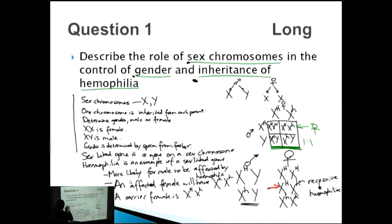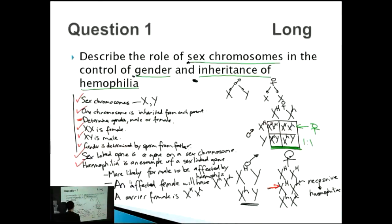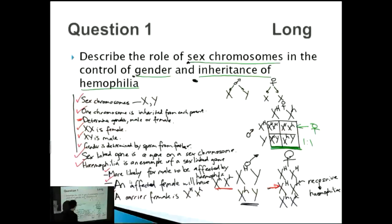Let's mark these all together now. We get one mark for stating what sex chromosomes are and that they're inherited from each parent. One mark for XX is female, one for XY is male, and one for gender being determined by the father. That's already five points before we've touched on haemophilia. For haemophilia: one for sex-linked gene, one for haemophilia as an example, one for males being more likely to be affected, one for the affected female genotype, and one for the carrier female genotype. Counting those up, there are ten marks, and we'll easily get the required eight marks to get full marks.